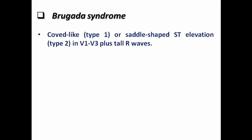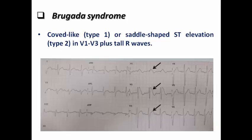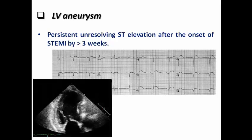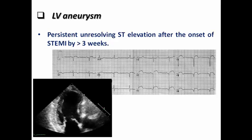In Brugada syndrome, there are three types. Type 1 shows cove-like ST elevation, and Type 2 shows saddle-shaped ST elevation. These findings are seen in leads V1 to V3 because the pathology in Brugada syndrome is in the RVOT. Brugada syndrome carries a risk of sudden cardiac death and will have a dedicated lecture. LV aneurysm — a mechanical complication after completed STEMI — can show persistent, unresolving ST elevation more than three weeks after the onset of MI. Whenever I see persistent ST elevation beyond three weeks post-MI, I should arrange echocardiography to confirm or exclude LV aneurysm formation.